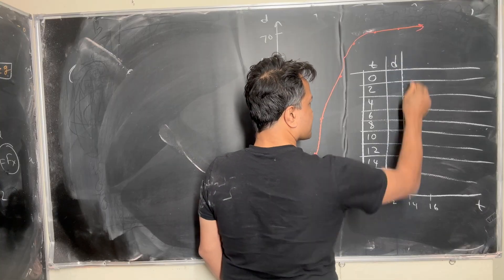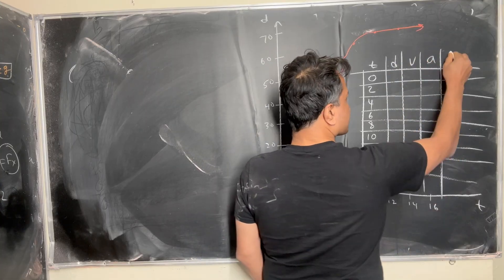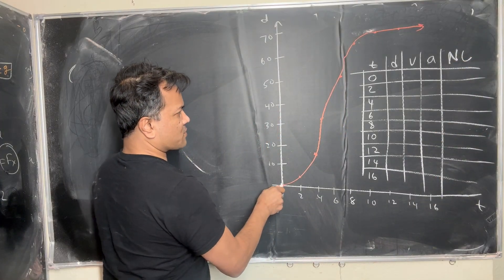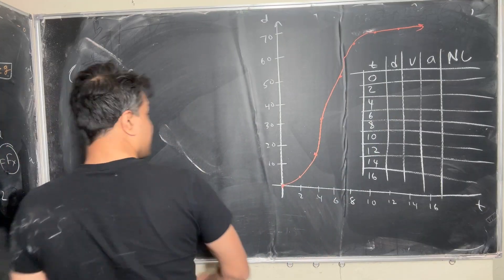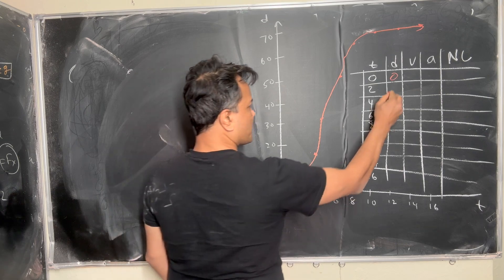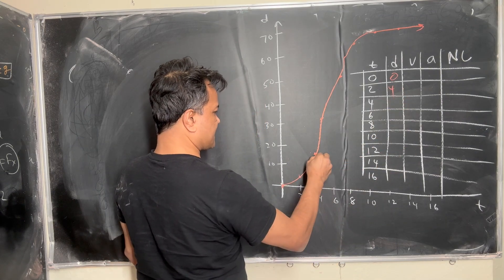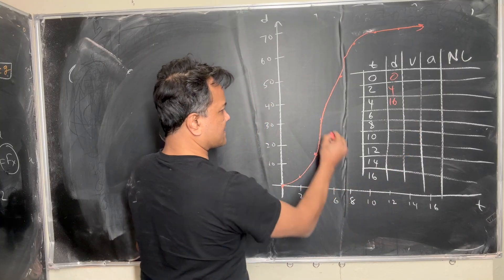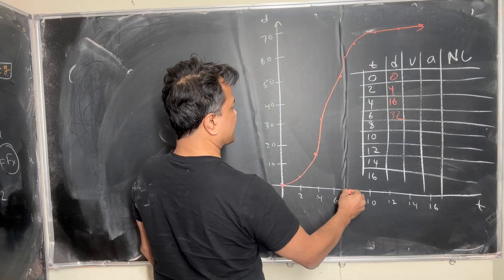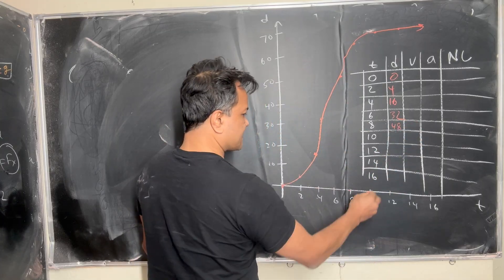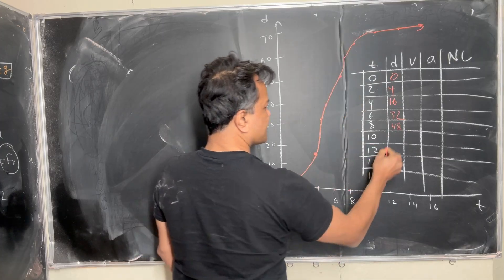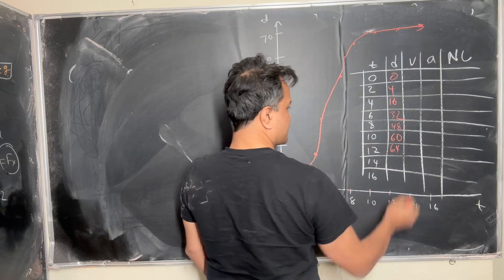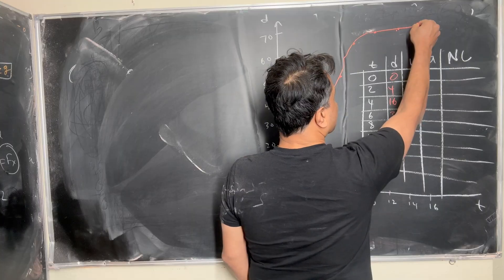The columns are: d (displacement), v (velocity), a (acceleration), and Newton's law. At zero seconds the displacement is zero. At two seconds it's four, at four seconds it's 16, at six seconds it's 32, at eight seconds 48, at ten seconds 60, at twelve seconds 64, fourteen seconds 64, and sixteen seconds 64.